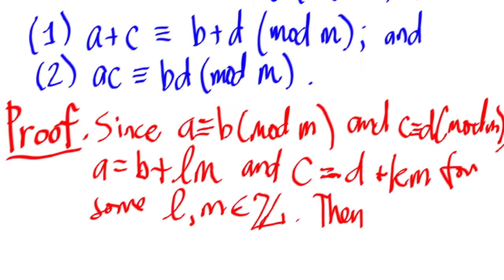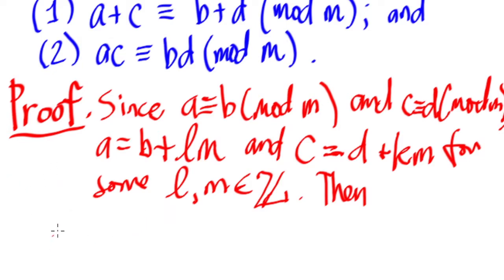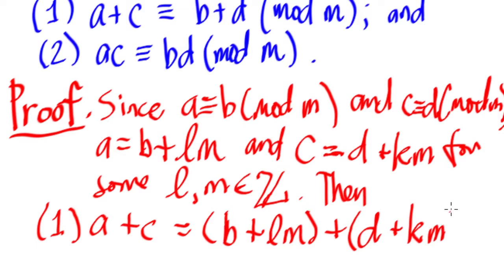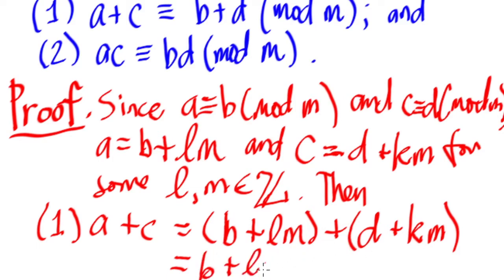Let's prove the first case — addition. A plus C equals (B plus LM) plus (D plus KM). Expanding, this is B plus LM plus D plus KM. Grouping common terms together, we get B plus D plus LM plus KM.